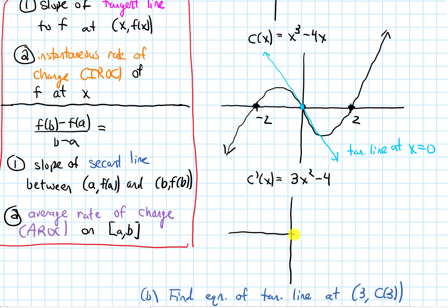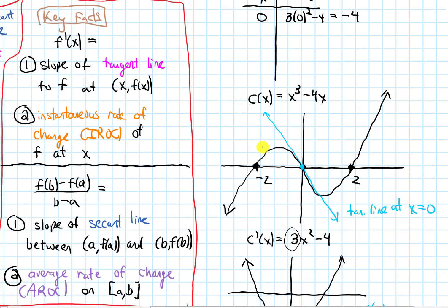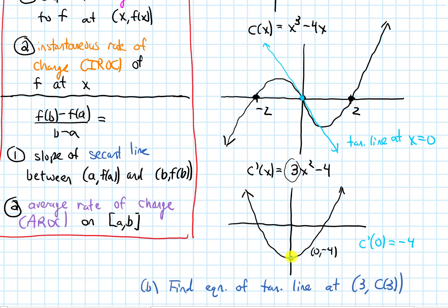The derivative 3x squared minus 4 is a quadratic, so its shape is a parabola. Because the leading coefficient 3 is positive, it's an upward-facing parabola. The y-intercept, plugging in x equals 0, is negative 4. So the bottom point of the parabola is at 0 comma negative 4. On this graph, c prime of 0 equals negative 4, and that y-value is telling me what the slope of the tangent line should be in the original function's graph — and it matches the negative slope we saw.